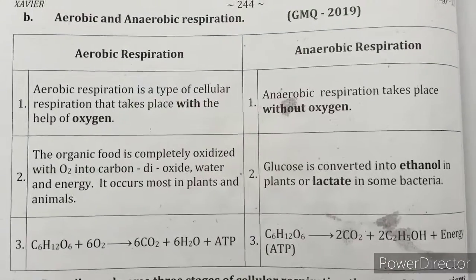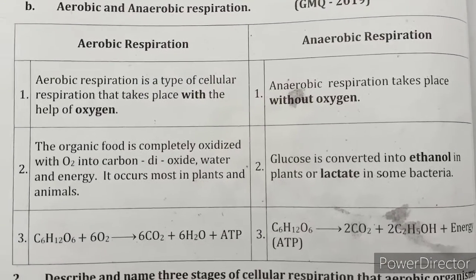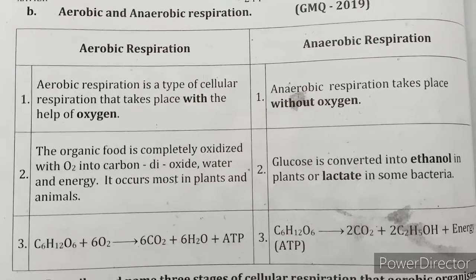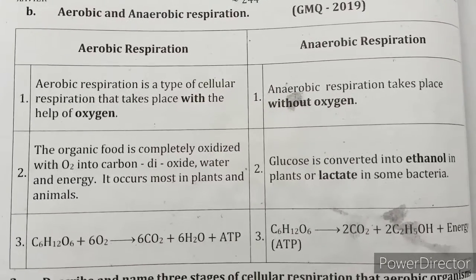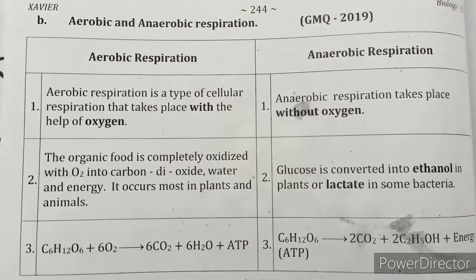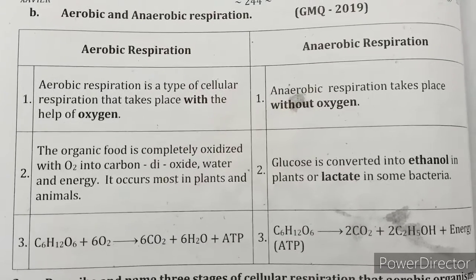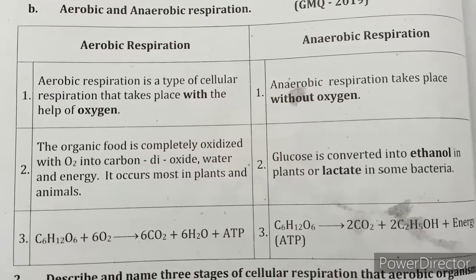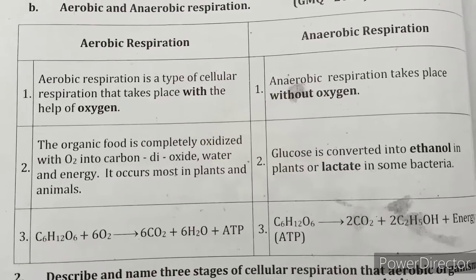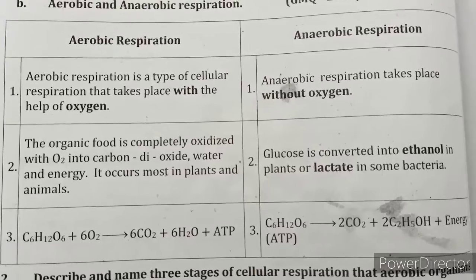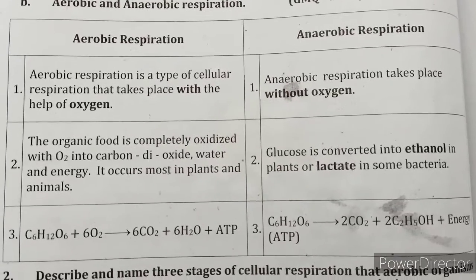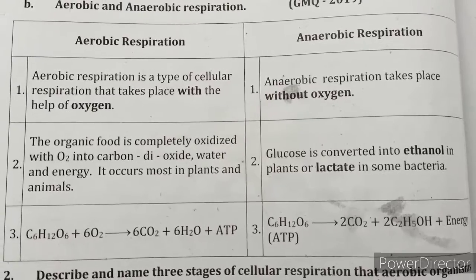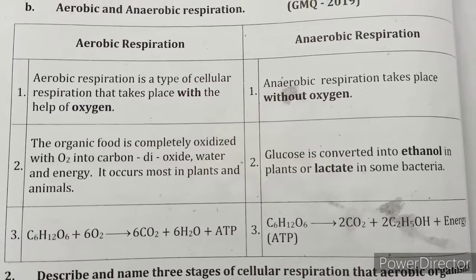Aerobic respiration is a type of cellular respiration that takes place with the help of oxygen. Anaerobic respiration takes place without oxygen. In aerobic respiration, organic food is completely oxidized with O2 into carbon dioxide, water, and energy. In anaerobic respiration, glucose is converted into ethanol in plants or lactate in some bacteria.